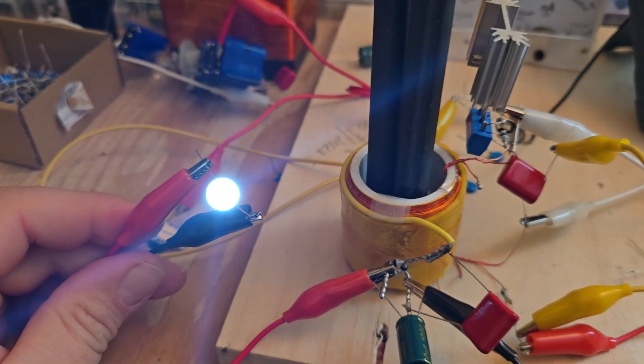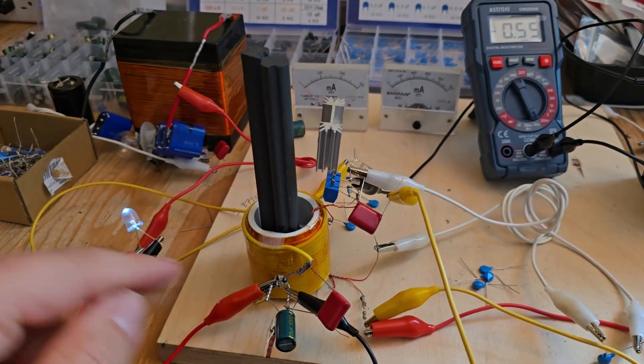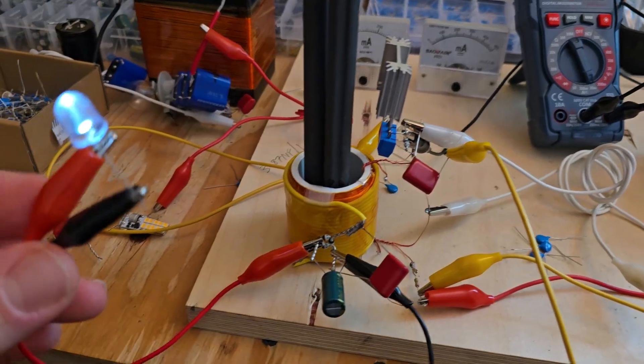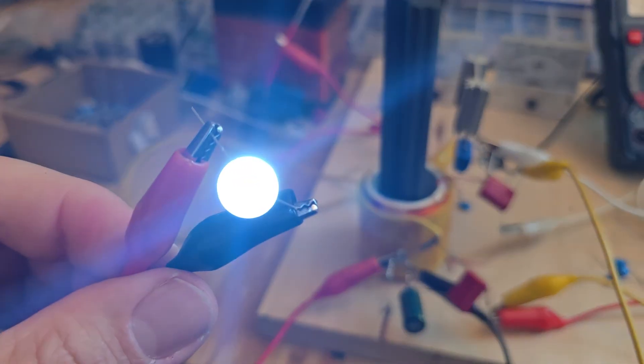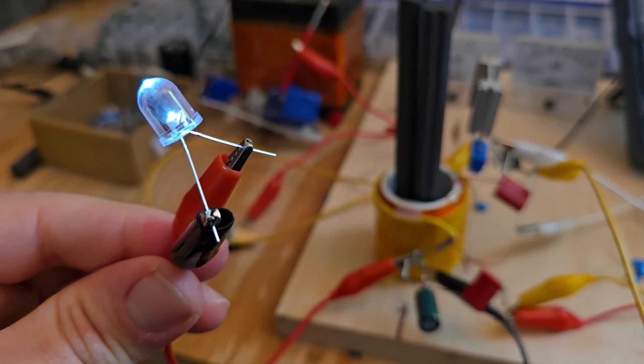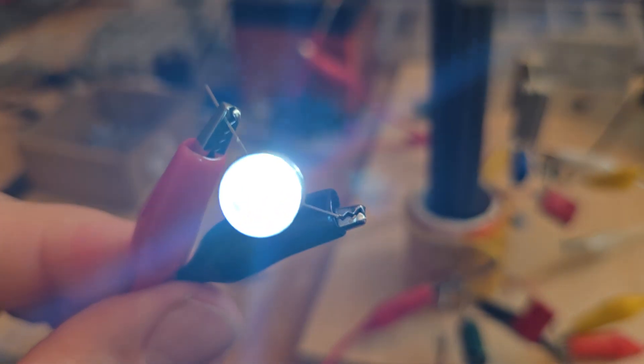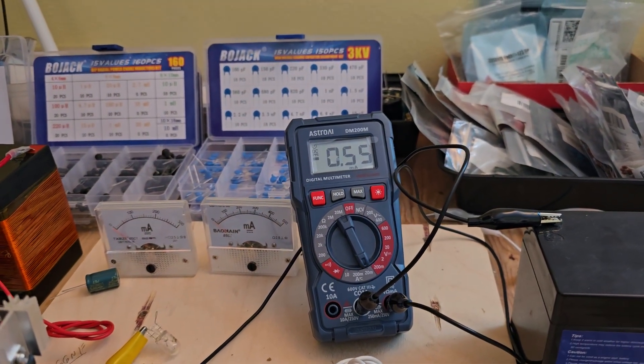But I'm wondering now if I should just keep stacking modules and combining the DC outputs. Because there's no way you can get a 10 millimeter 3 volt DC LED this bright from half a milliamp on the input at 12 volts.